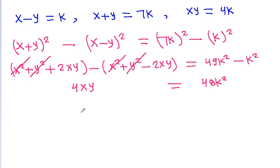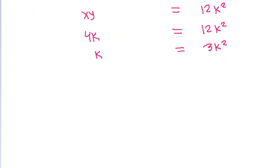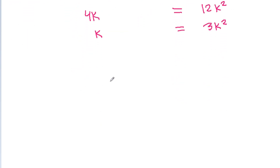We get xy is equal to 12k squared. And since x-y is equal to 4k, we have 4k equal to 24k squared. Dividing by 4, we get k equal to 3k squared, so 3k squared minus k is equal to 0.